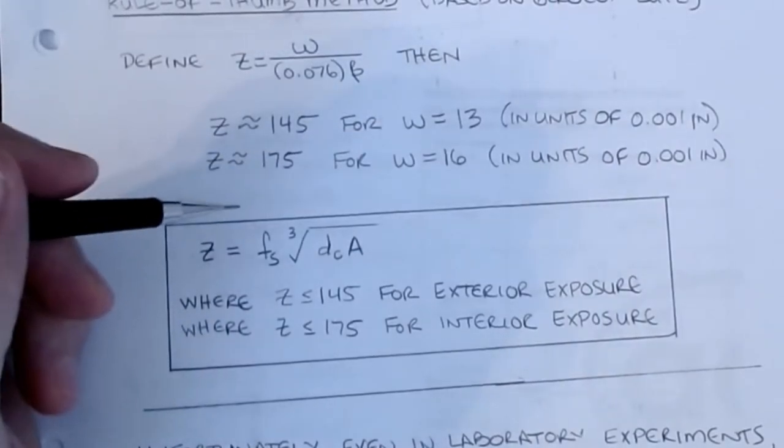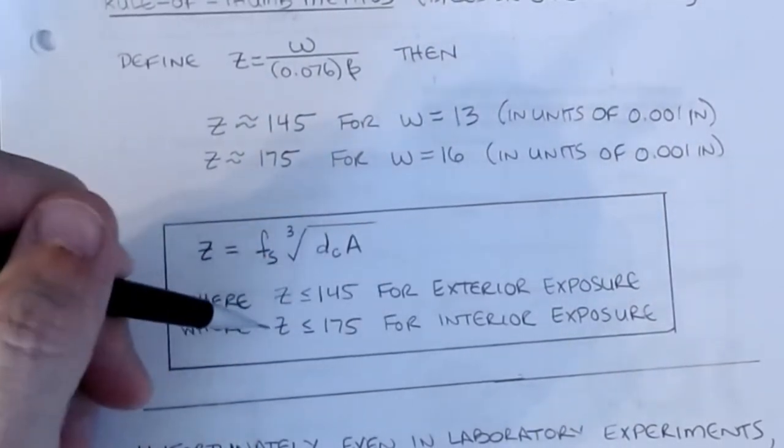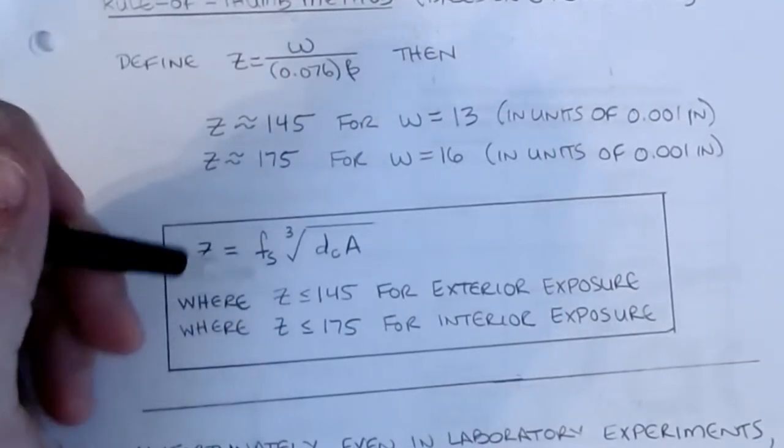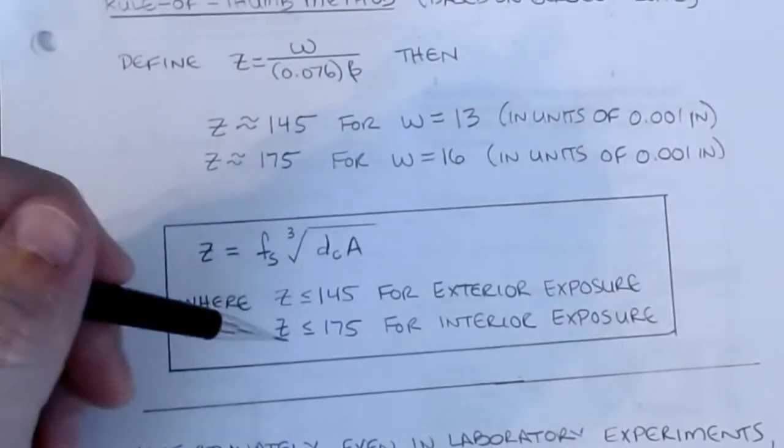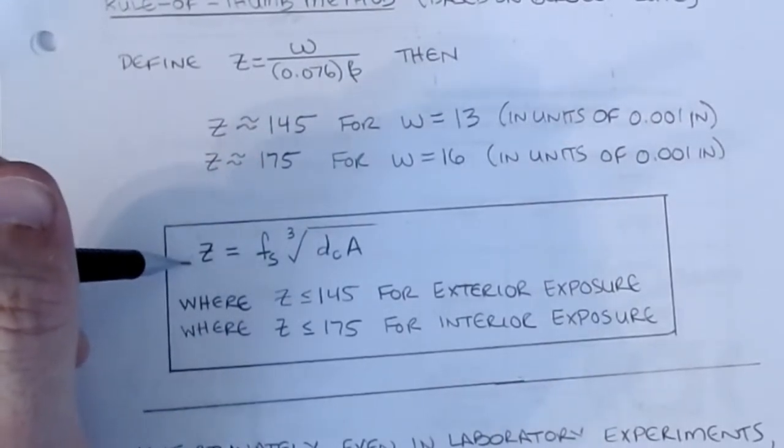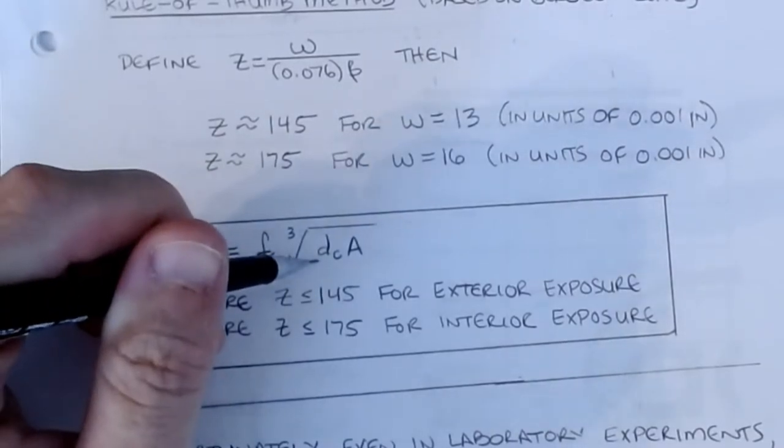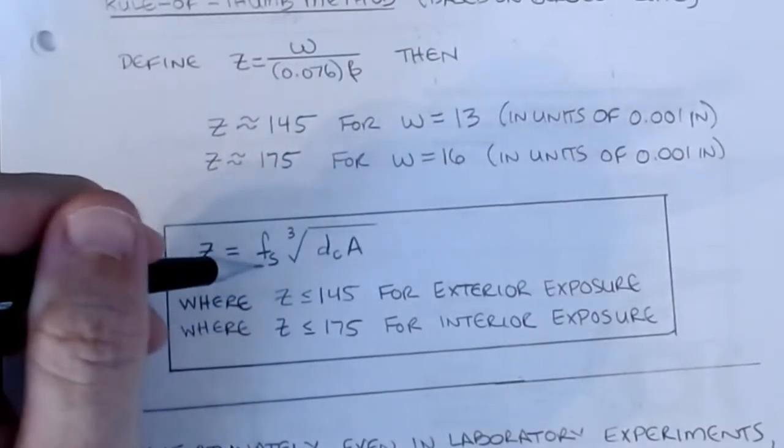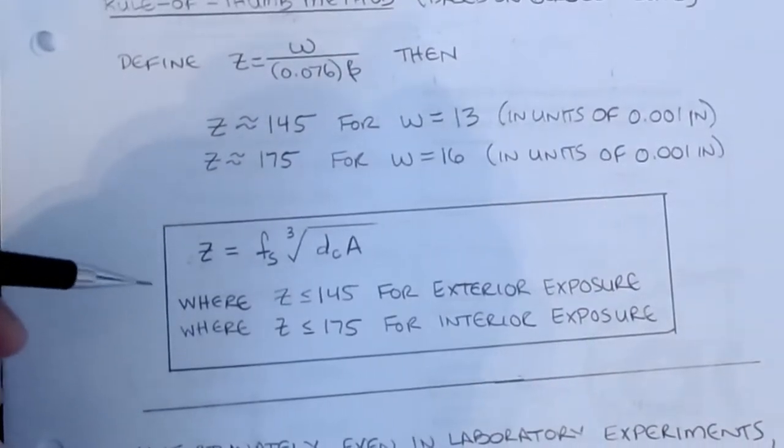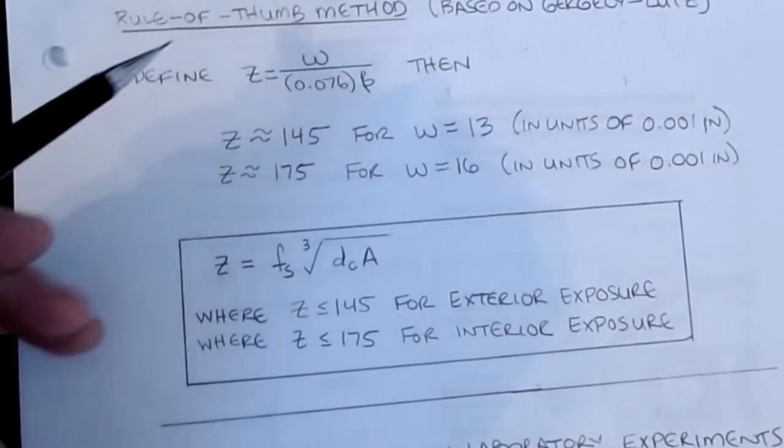So all we do then is that we derive out the Gergely-Lutz equation, and then we modify it into this Z parameter, which is kind of our crack characteristic, and we calculate Z as then being the Fs, our stress value, multiplied by the cubed root of the square root of DCA, that is that Gergely-Lutz equation explicitly. And then we limit Z to being 1.45 for exterior exposures, exposed to the elements, where cracks and wider cracks would be a bigger problem, versus interior exposure, where it's protected from the elements, and Z is allowed to be 1.75. That's how we start to kind of analyze this depending on whether it's exterior or interior.